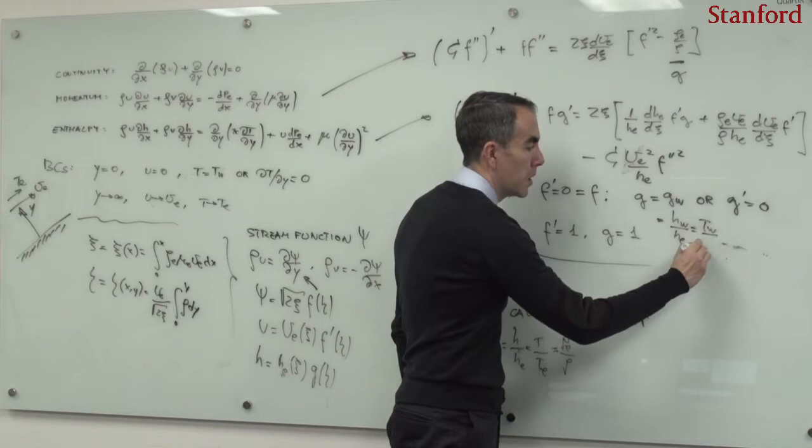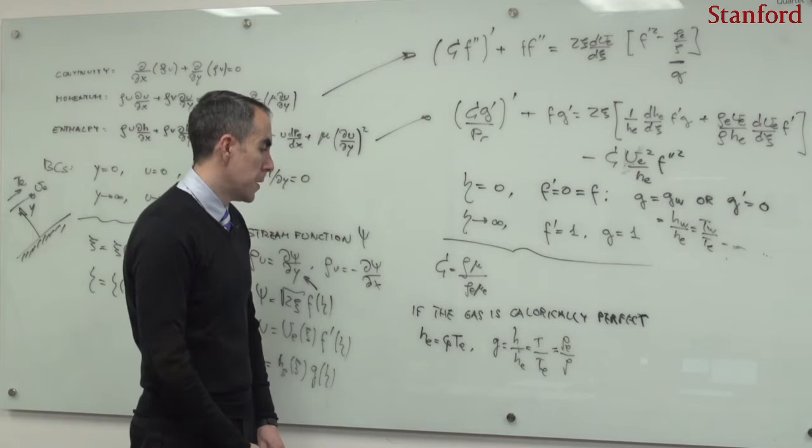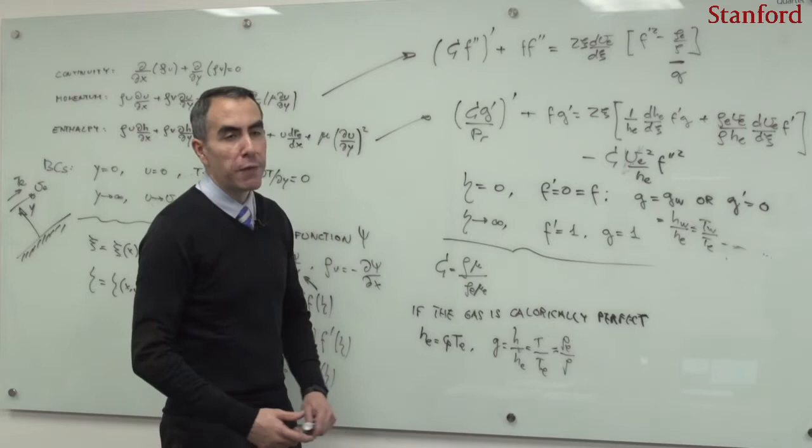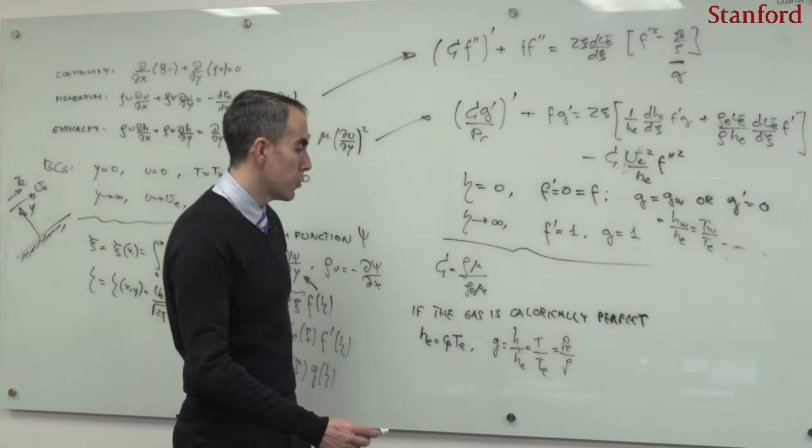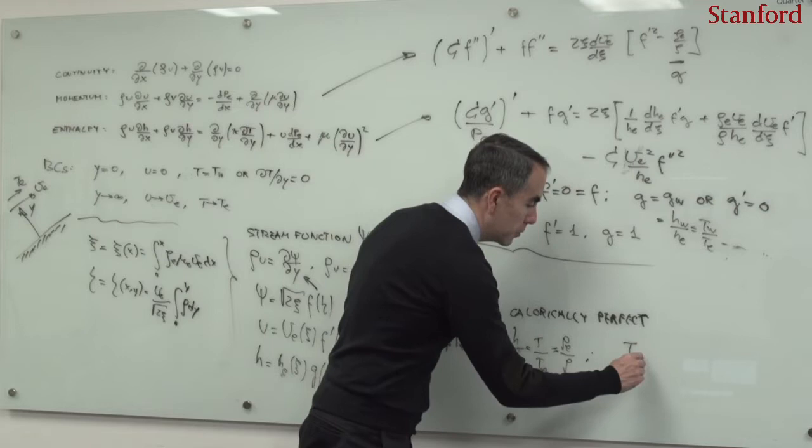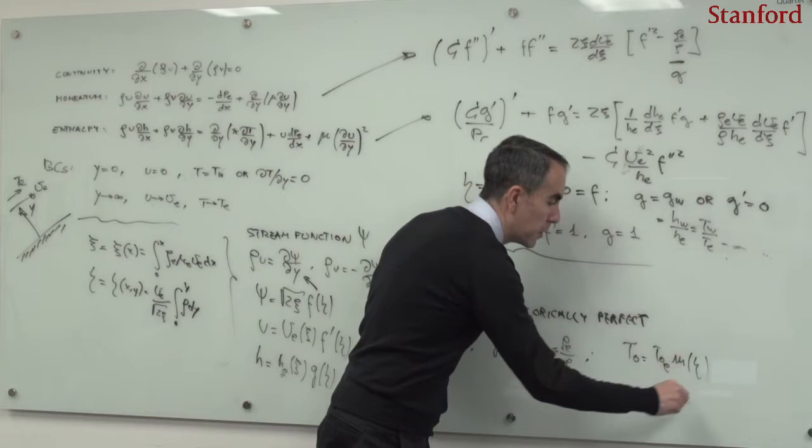If the gas is calorically perfect, one can define a dimensionless stagnation temperature as T0 equal to T0_e multiplied by M(eta). This T0_e must be uniform because the flow outside the boundary layer above the plate is isentropic, so the edge stagnation temperature must be uniform.